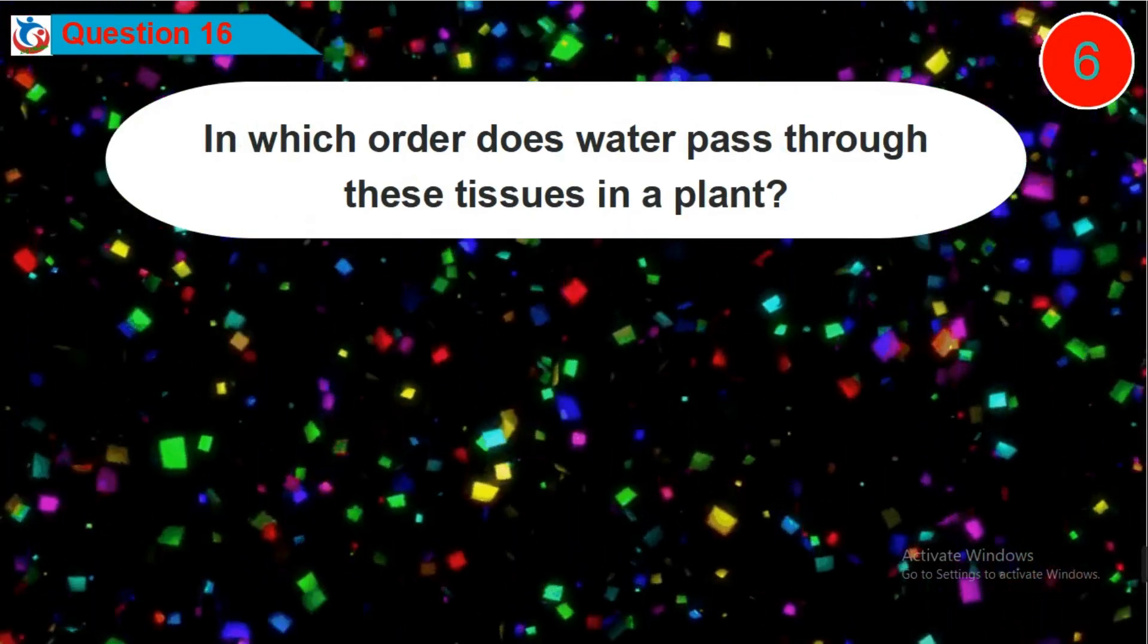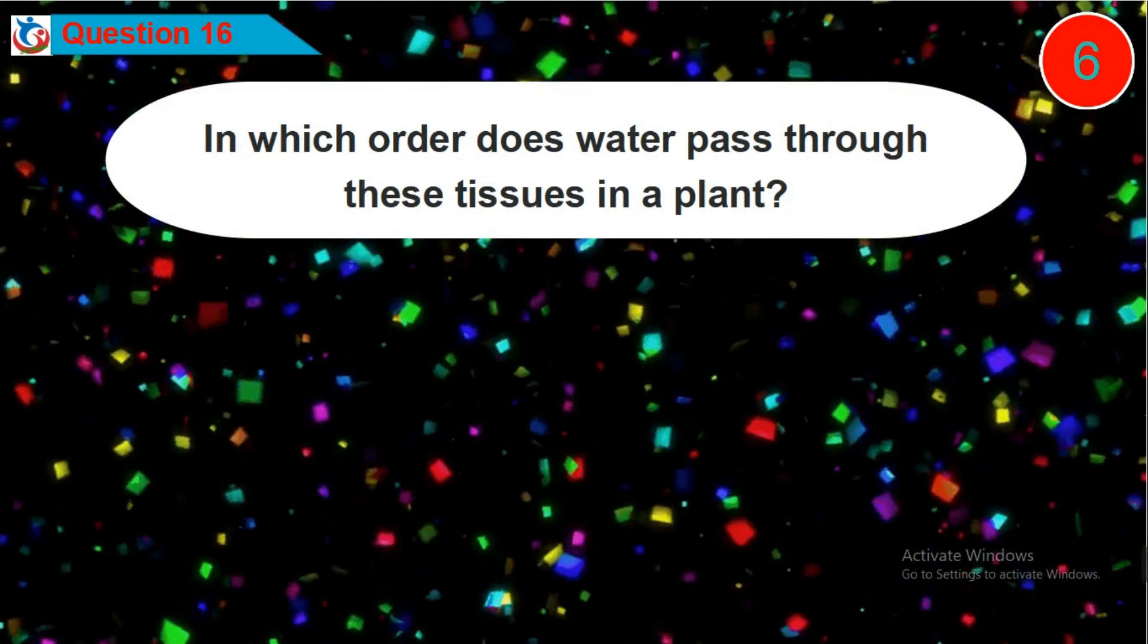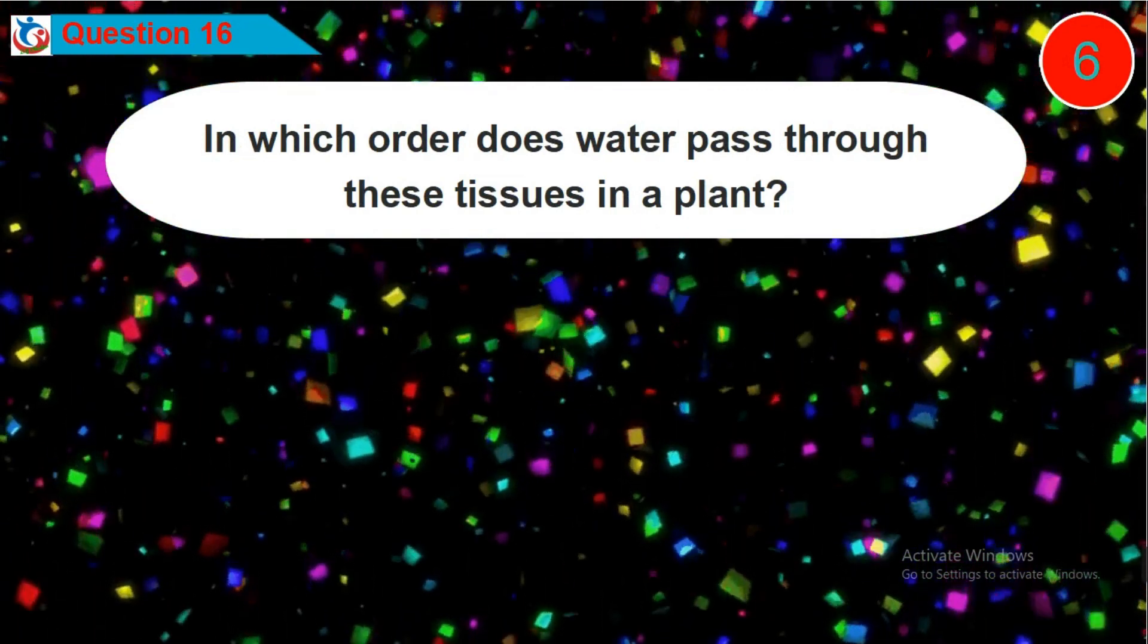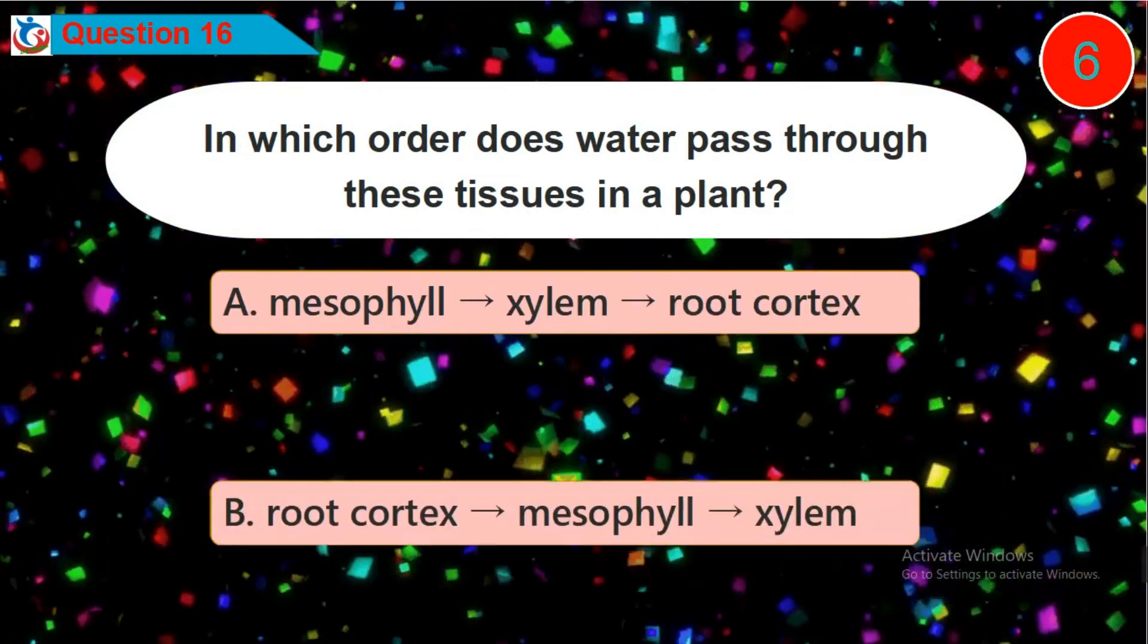Question 16. In which order does water pass through these tissues in a plant? Is it option A, B, C or D?